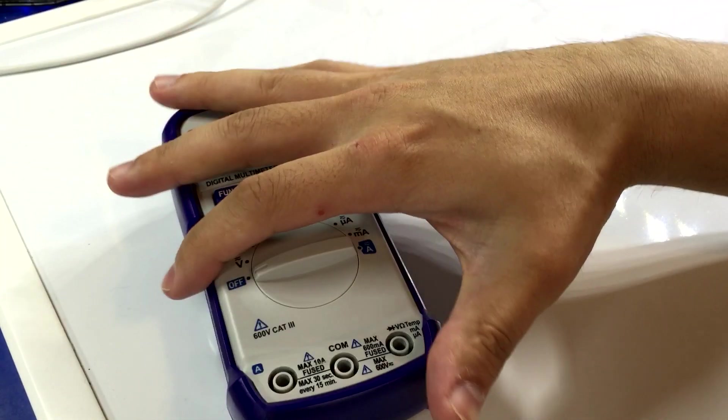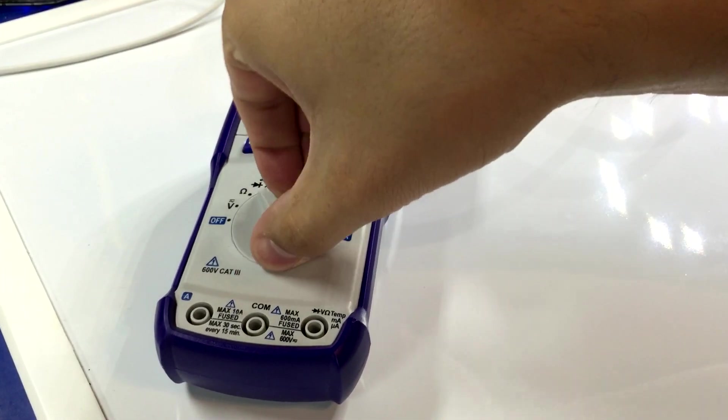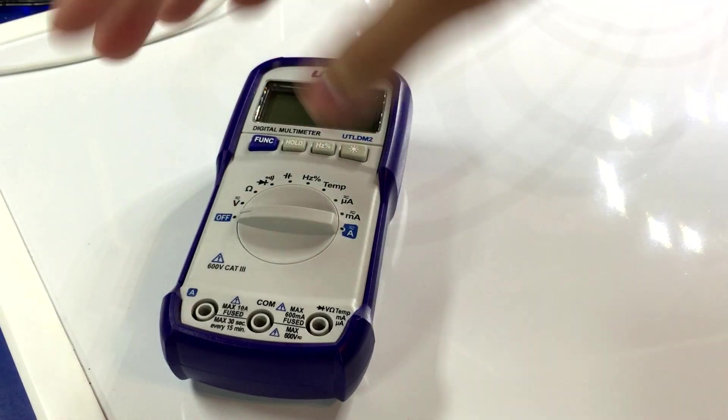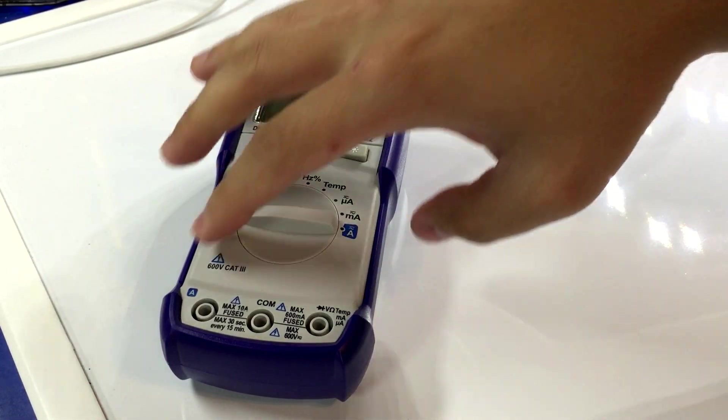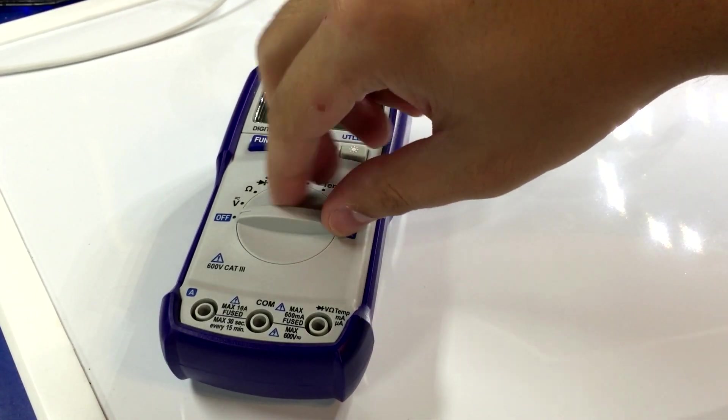Now the infamous Dave Jones range switch test. It stays put for the most part. Now this is flexible, so if you see it moving a little bit that's mostly probably this flexing, but yeah, I'd say that passes muster.